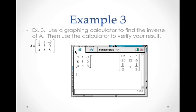And your calculator will give you your inverse. The inverse is 12, negative 7, 3, negative 20, 12, negative 5, 3 halves, negative 1, 1 half.